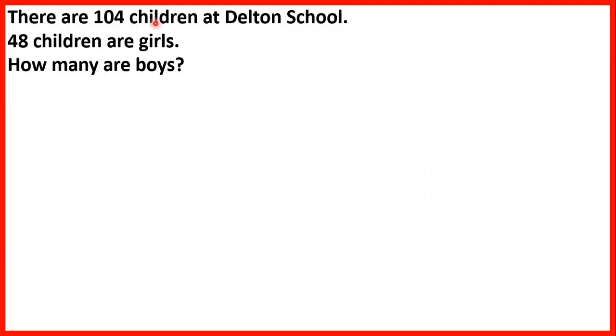There are 104 children at Delton school. 48 children are girls. How many are boys? So to find the number of boys, we need to find the difference between the number of girls and the total number of children. So we can work out 104 minus 48. So 4 is smaller than 8, and normally we go to the left 1 less 1 in front. But here we have a 0, so we need to go to the left again. 1 less 1 in front. And then again. 1 less than 10 is 9.